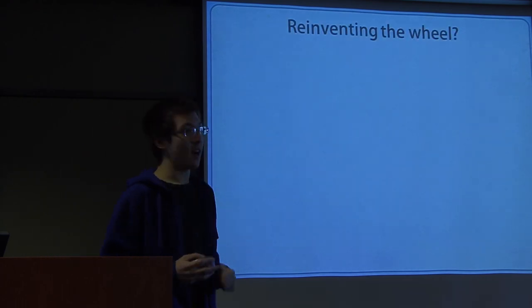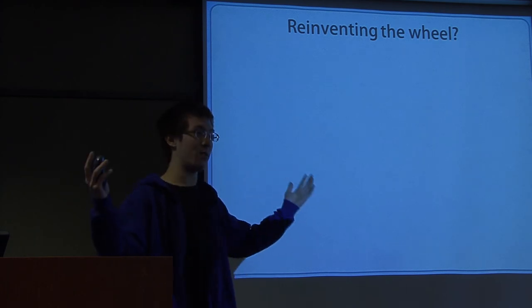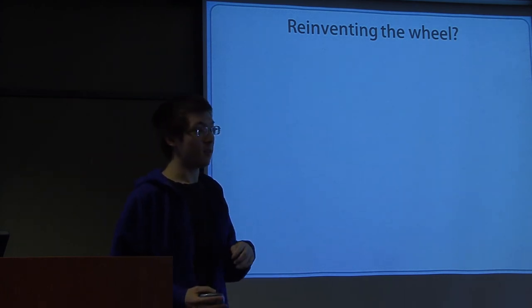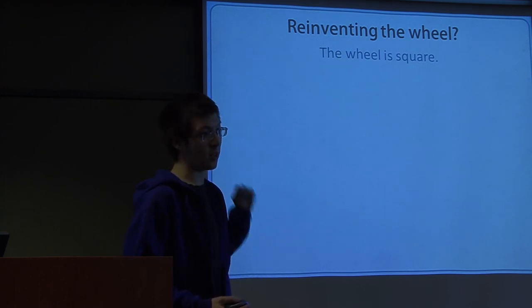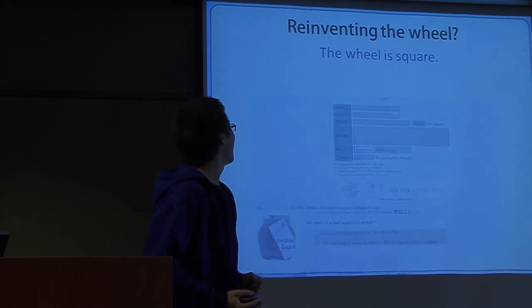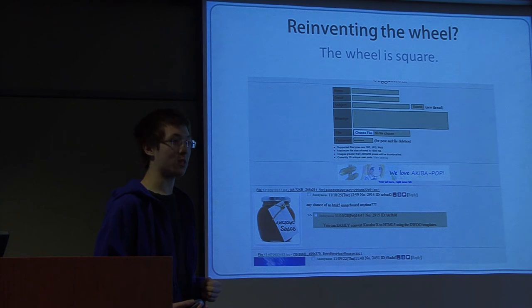Now, you might think I'm reinventing the wheel, because after all, there is 4chan out there. There's a bunch of image boards out there. But, as it turns out, they're all running one piece of software. The wheel is square, gentlemen. And what does the wheel look like? It looks like this. Kusaba X. Now, Kusaba X is a very robust piece of software, but it hasn't really been updated or modernized in terms of features for quite a while.